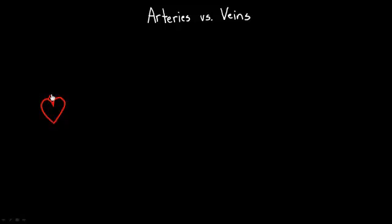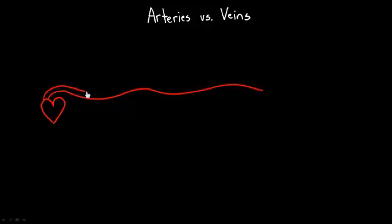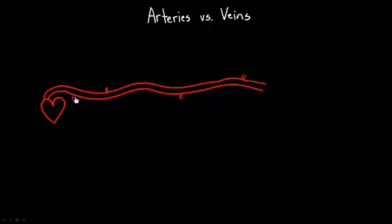So this is your heart, and coming off your heart is the aorta. Before this video, I've been drawing the aorta quite differently, kind of showing its branches. Here I'm showing it stretched out and I'll show a few of the branches, but the point of the drawing is not to make it anatomically correct — you can tell it definitely is not anatomically correct.